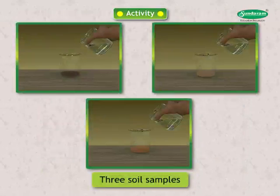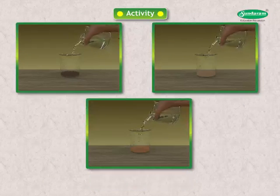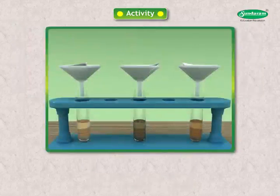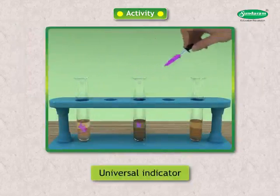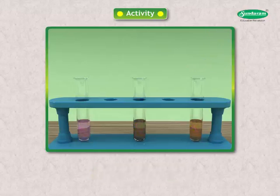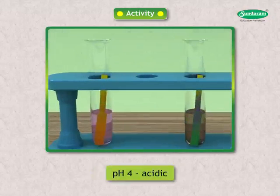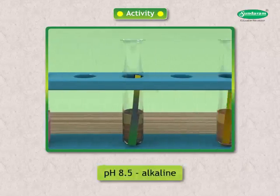Activity: Collect various soil samples. Mix with water and filter. Collect the filtrate in test tubes and test with universal indicator. Make a list of plants growing in that area. If paper shows orange colour, the pH of soil is 4 — the soil is acidic. If the colour of paper is greenish to blue, the pH is between 8 to 9 and the soil is alkaline.